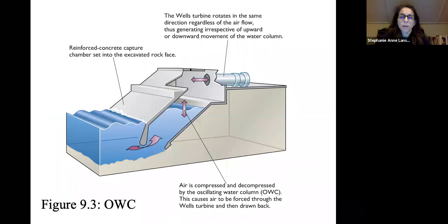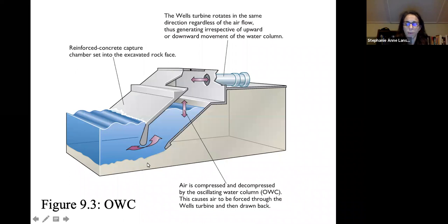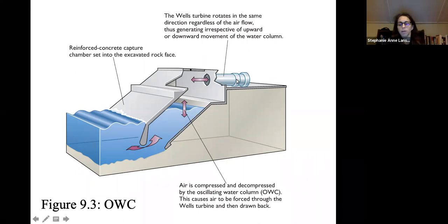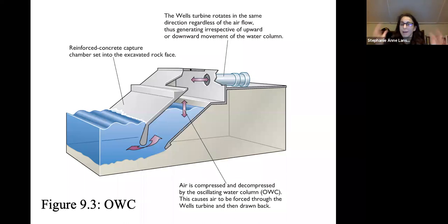Here's another oscillating water column example. Again, we have the air chamber where the wave pushes air in and out. Some of these have been enclosed in a turbine house because the air movement is actually quite loud and makes significant noise.